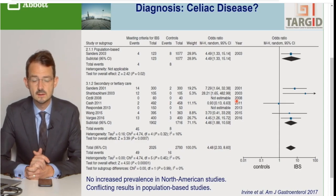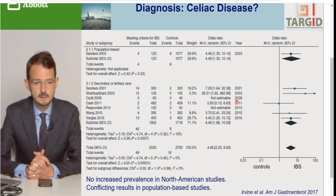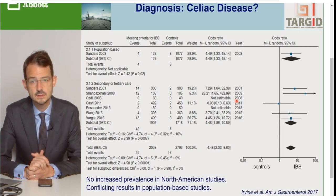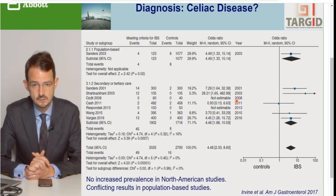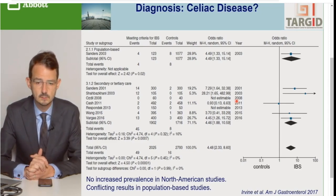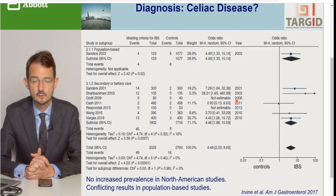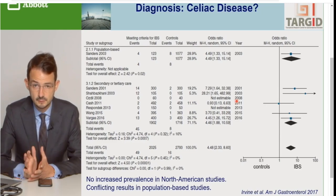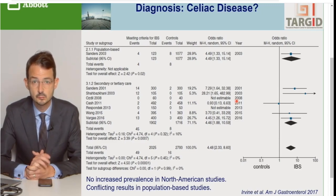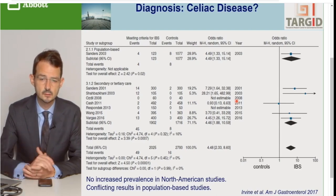Bệnh lý celiac là một bệnh lý hữu cơ thực thể khác mà bệnh cảnh của nó có thể tương tự như IBS, cũng có thể có táo bón hoặc là có triệu chứng đặc hiệu khác. Người ta đã kiểm tra xem những bệnh nhân có triệu chứng phù hợp IBS có phải là celiac hay không. Trong các nghiên cứu trên dân số, người ta ghi nhận có sự tăng gấp 5 lần bị celiac ở những bệnh nhân phù hợp triệu chứng IBS so với dân số đối chứng. Tuy nhiên không phải nghiên cứu nào cũng thấy như vậy, điều này còn phụ thuộc vào tần suất chung - nếu vượt hơn 1 trên 200 người có bệnh celiac thì mới hiệu quả về chi phí để tầm soát.